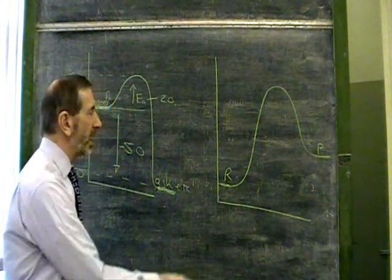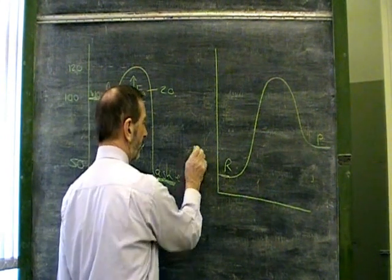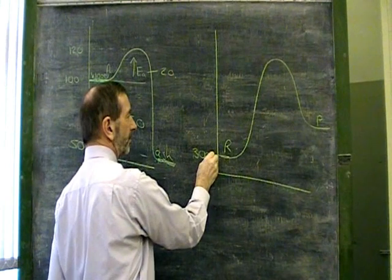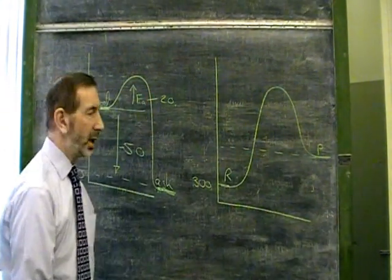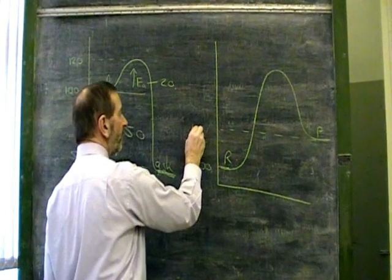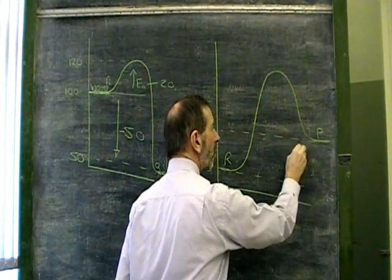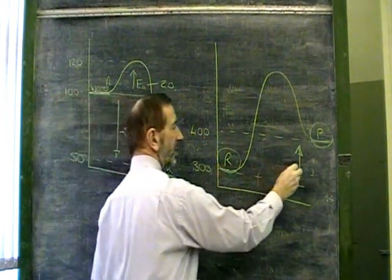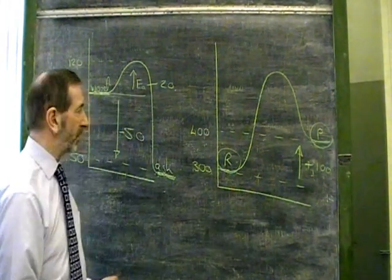Looking at this diagram here, once again we can come up with some hypothetical values. Let's suppose our reactants have initial energy of 300. Let's suppose our final product has a final energy of 400. Then it's obvious that the overall energy change going from reactants to product has a difference of 100. It would be plus 100 to imply it's endothermic.